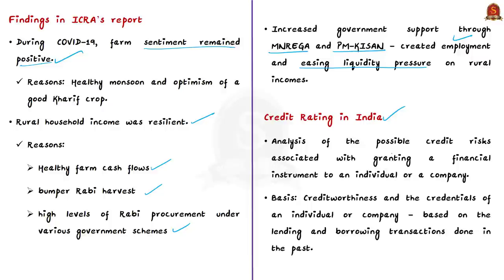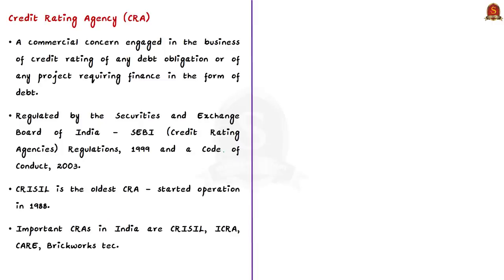Credit rating is an analysis of possible credit risks associated with granting a financial instrument to an individual or a company. The rating is provided based on the creditworthiness of an individual or company, decided based on lending and borrowing transactions done in the past. The credit rating is determined after weighing statements of liability and assets and their ability to meet debt obligations. A credit rating agency is a commercial concern engaged in the business of credit rating of any debt obligations or of any project or program requiring finance. The most significant aspect is that it is an opinion made available to the public, influencing decisions of participants in the financial market. Credit rating agencies are regulated by SEBI through the SEBI Credit Rating Agencies Regulations 1999, amended in 2003.